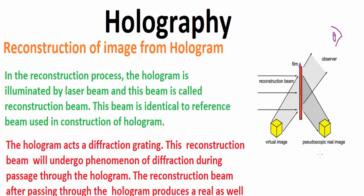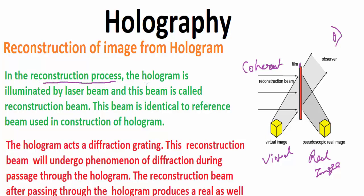So the real image is formed on one side and the virtual image is formed on the other side. The reconstruction wave is coherent light. In the reconstruction phase, the hologram is illuminated by a laser beam, which is known as the reconstruction beam.